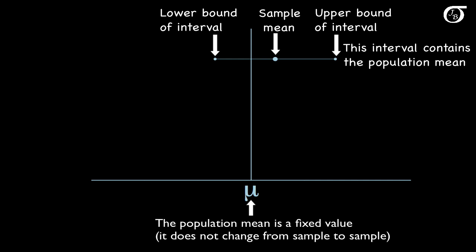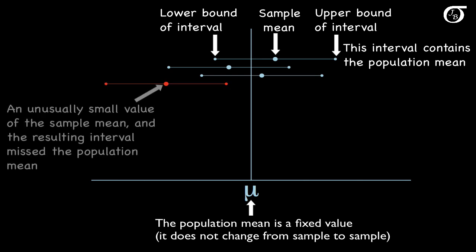We could draw another random sample from the population, get another value of the sample mean, and calculate another confidence interval — and this interval also captured the value of mu. Drawing another sample, on the fourth sample we got an unusually small value of the sample mean x̄, and the resulting interval failed to capture mu.